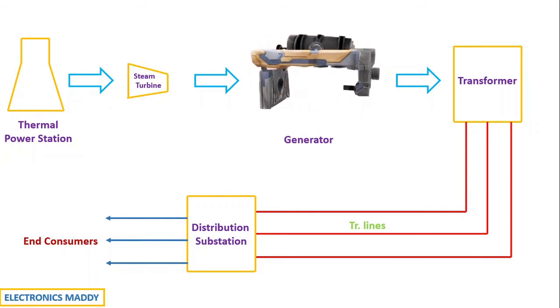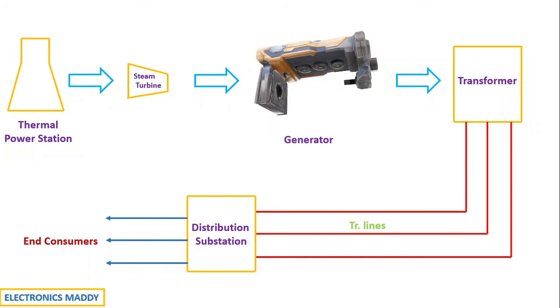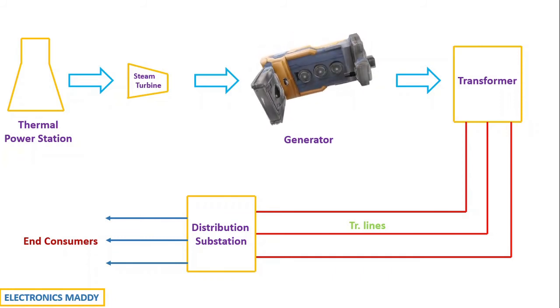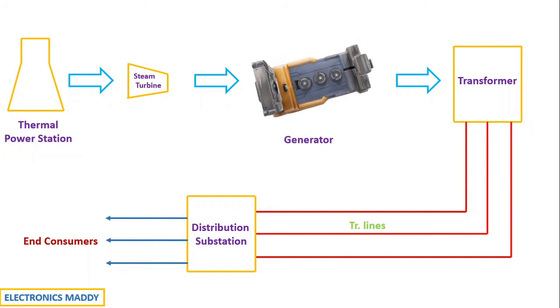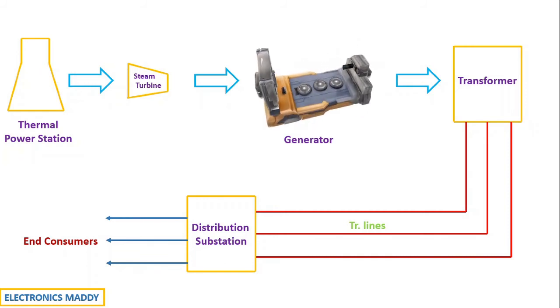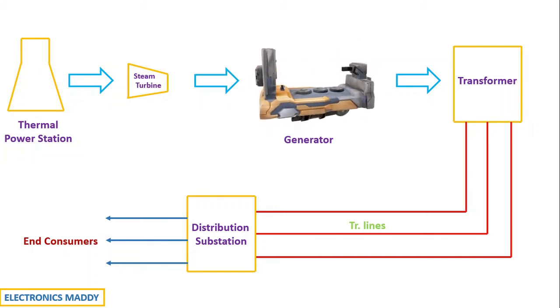One important thing that needs to be observed here is if you have components like transformers, transmission line, distribution station, turbines, generators, etc. These components play a very important role in deciding the frequency. So while deciding the frequency, care has to be taken to consider the effect of each of these components for efficient operation.